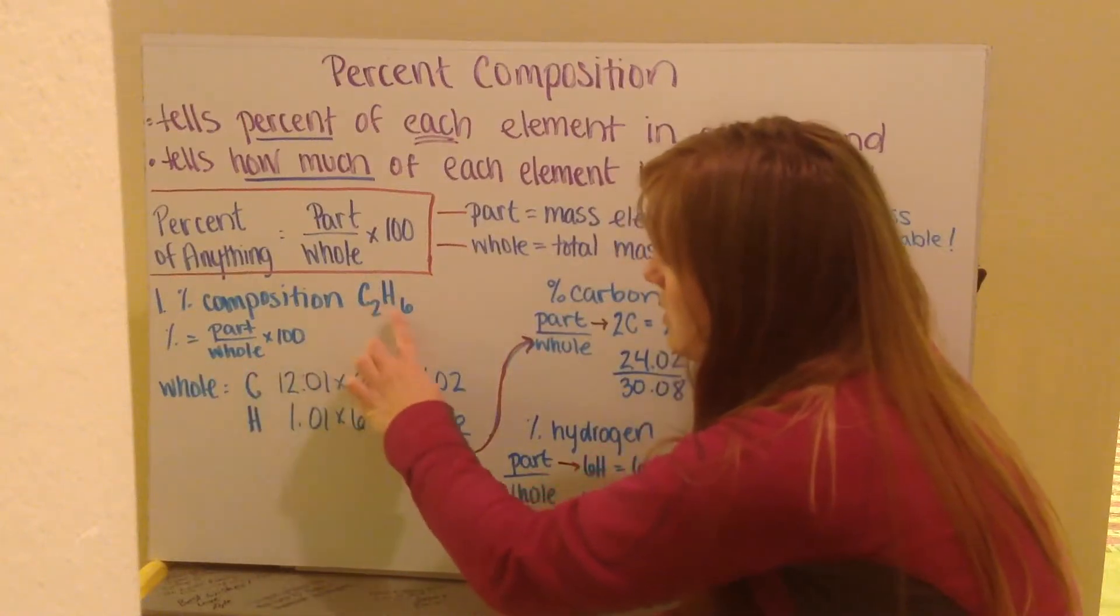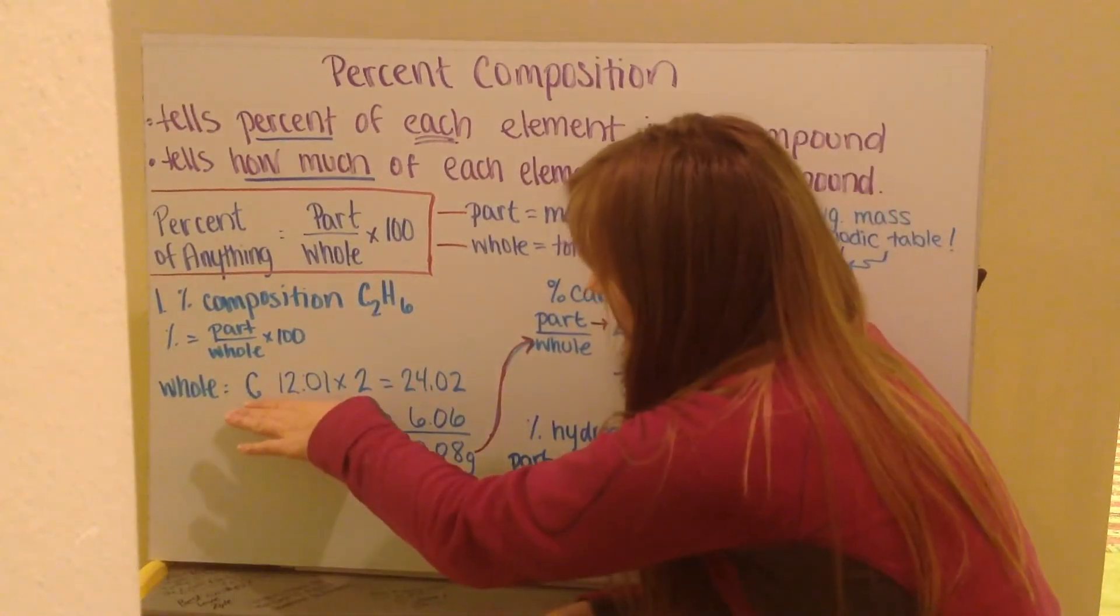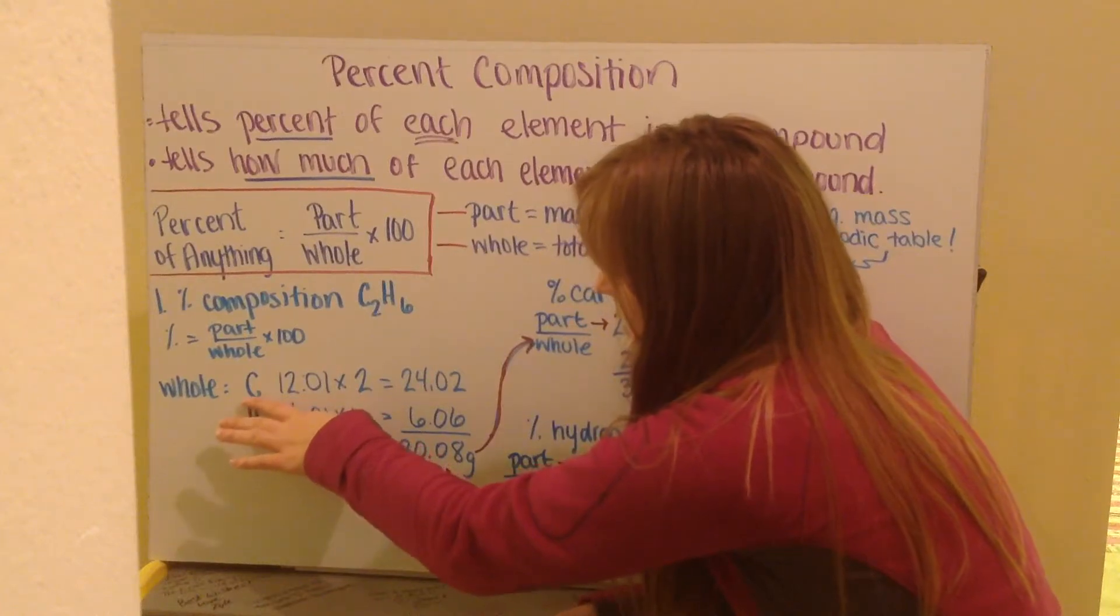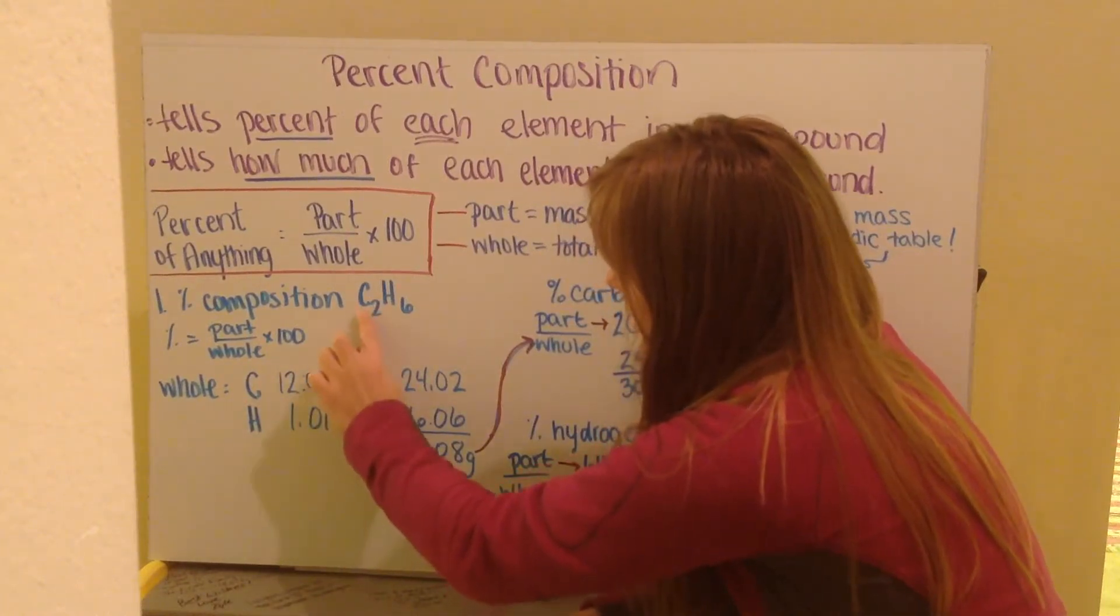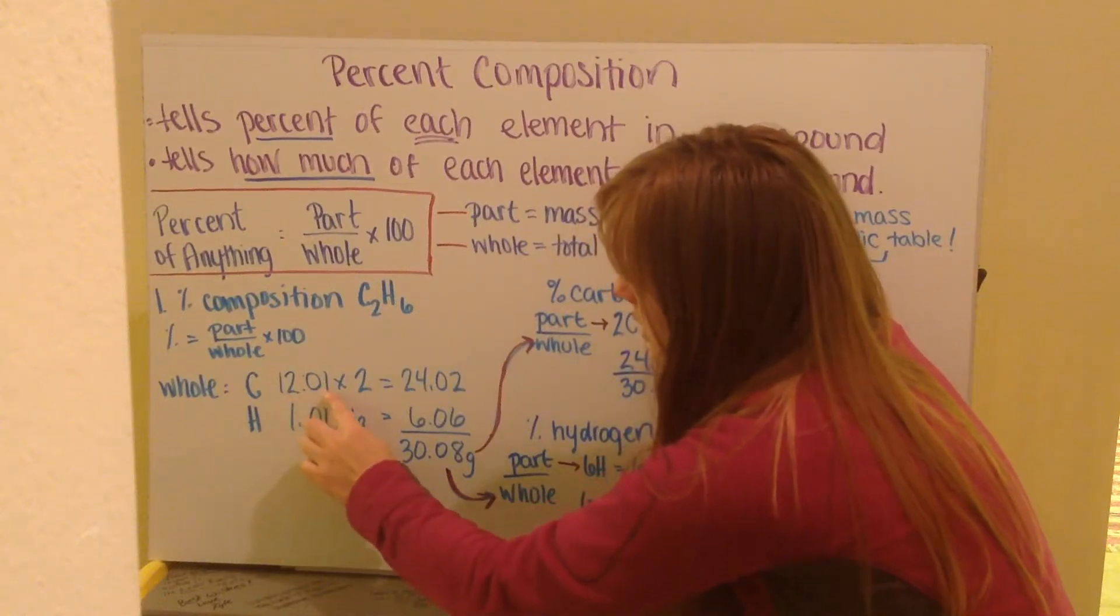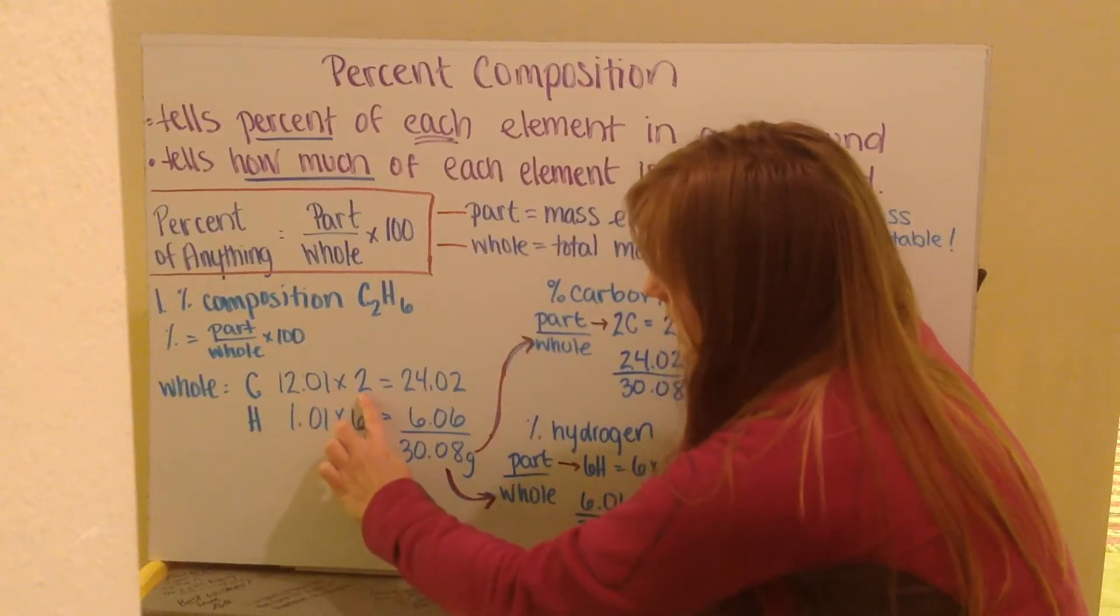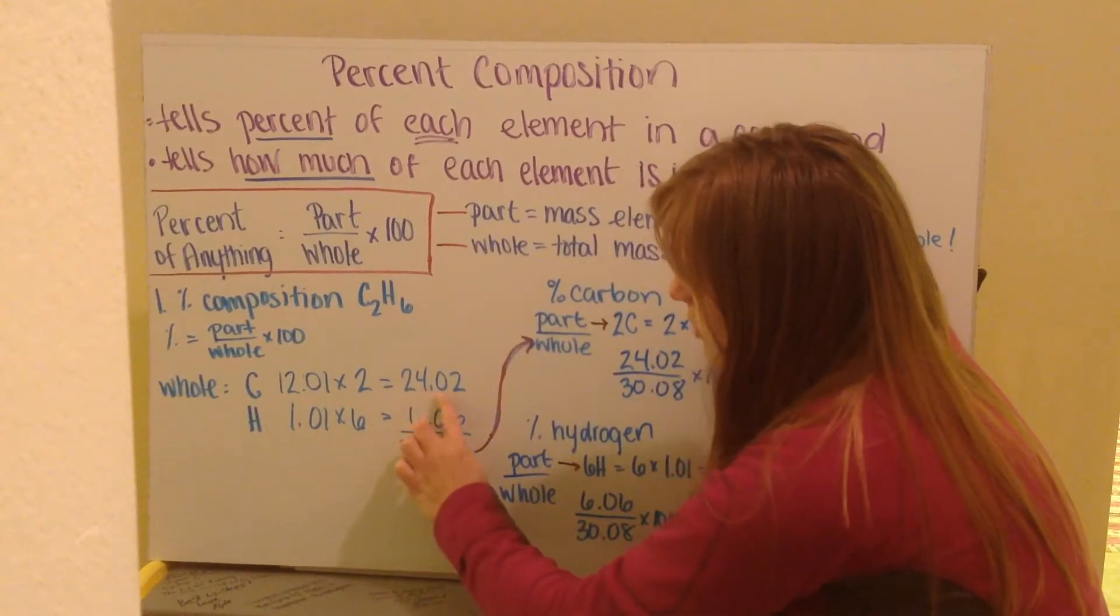My whole is the total mass of my compound. The total mass of C2H6 is where I'm going to determine my mass of my carbon. Here I have two carbons, two carbon atoms. Each carbon atom has a mass of 12.01 grams, and I have two of them, so I multiply my mass times the number of atoms I have, which gives me 24.02.